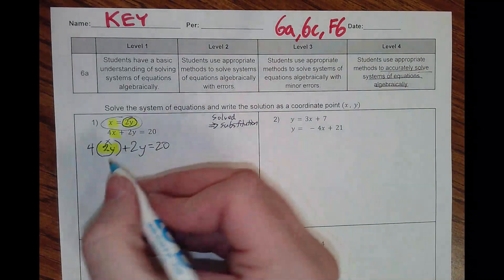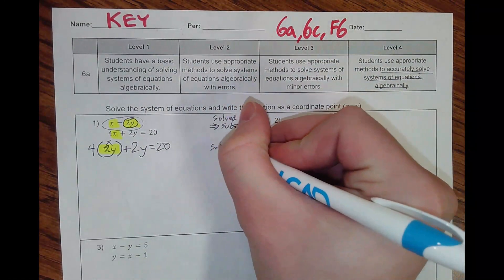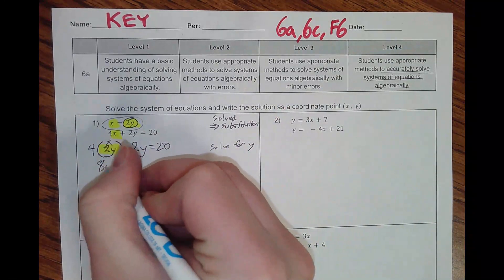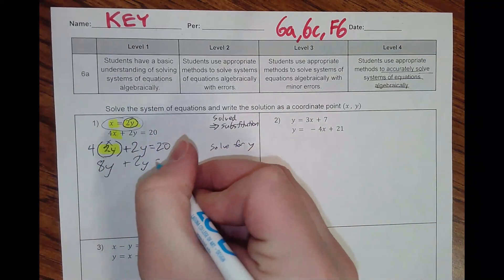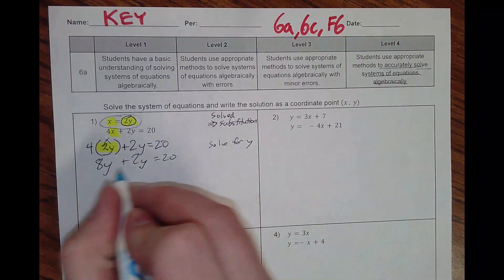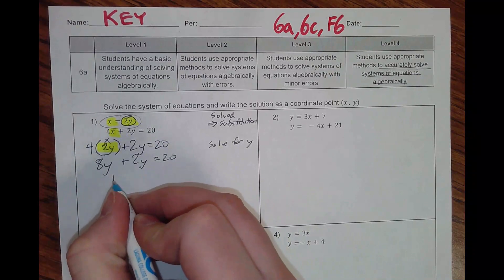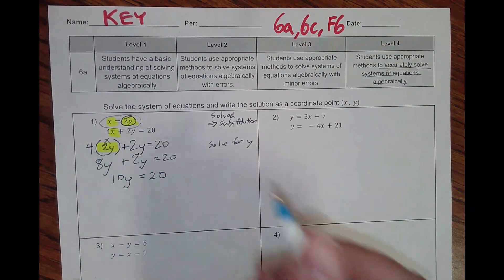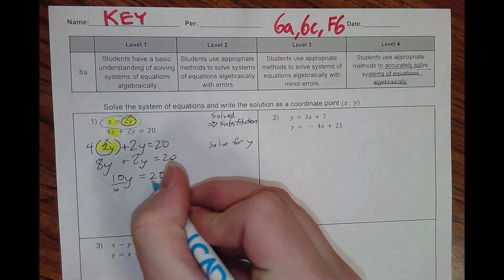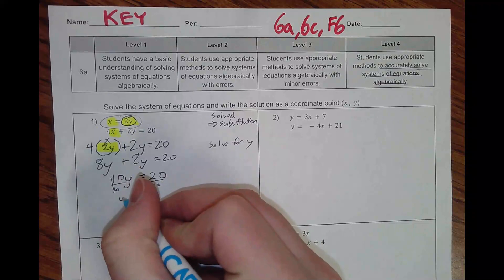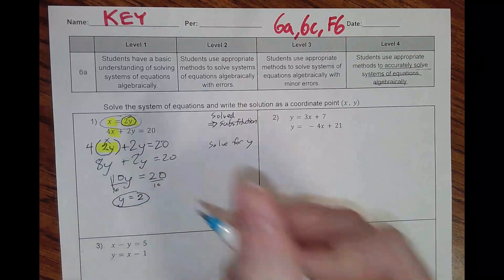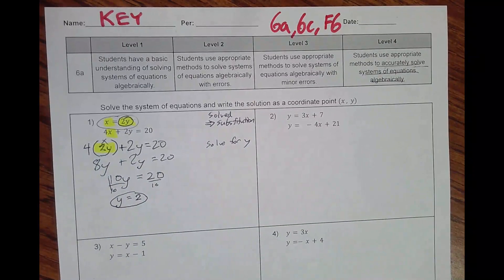Now I have to solve for y. 4 times 2y is going to be 8y. 8y plus 2y equals 20. Combining like terms, 8y plus 2y is 10y. 10y equals 20. I will divide by 10 and I will get my answer of 20 divided by 10, which is 2. I will circle that because I know it's not my final answer.